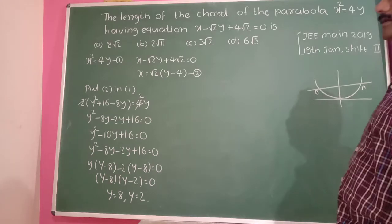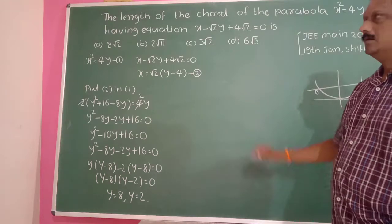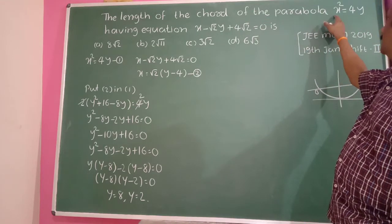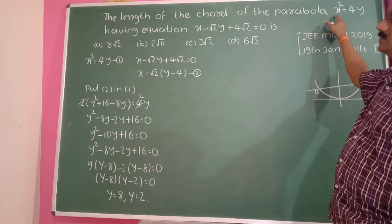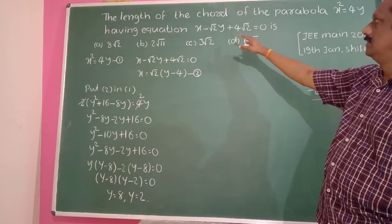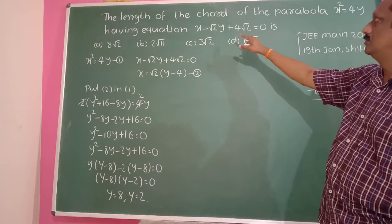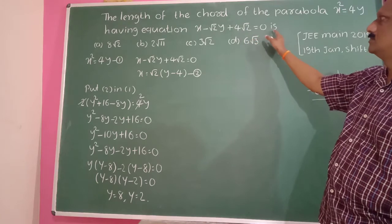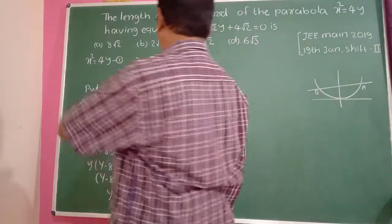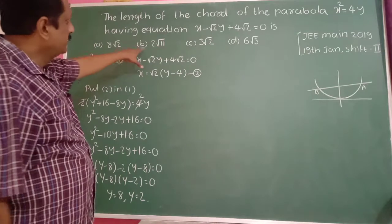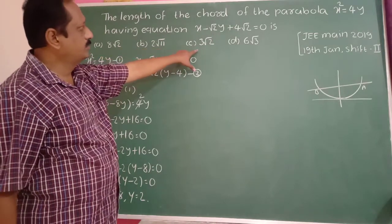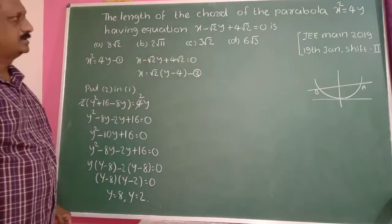The next example: find the length of the chord of the parabola x² = 4y having equation x minus √2·y plus 4√2 equals 0. The options are: first option 8√2, second option 2√11, third option 3√2, fourth option 6√3.